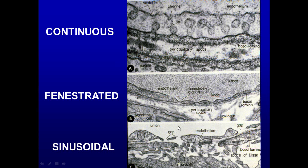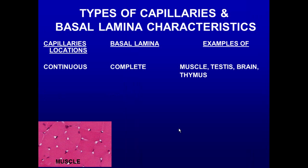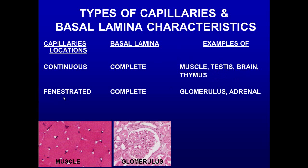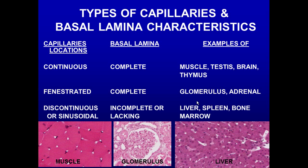Continuous capillaries have a complete basal lamina and are found in muscle, testis, brain, and thymus — places where you cannot have edema. Fenestrated capillaries have a complete basal lamina and are found in the glomerulus and the adrenal. Discontinuous or sinusoidal capillaries have an incomplete or lacking basal lamina and are seen in the liver, spleen, and bone marrow. In these cases white blood cells and red blood cells move through.